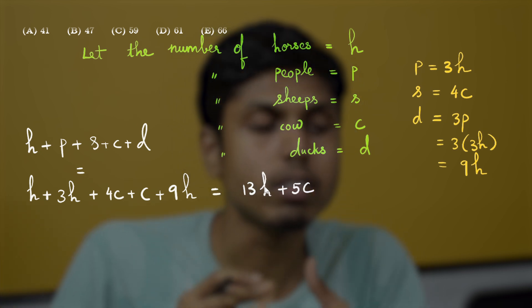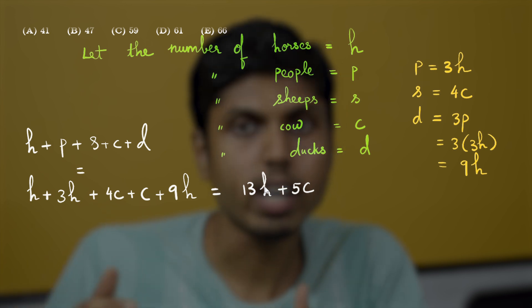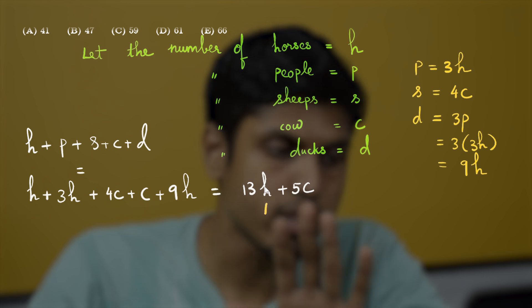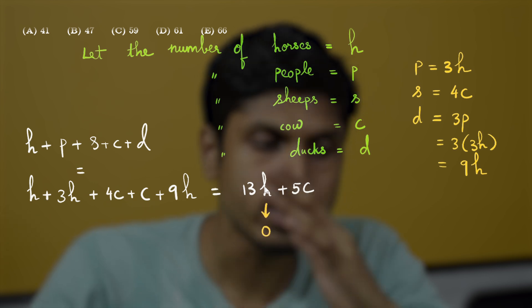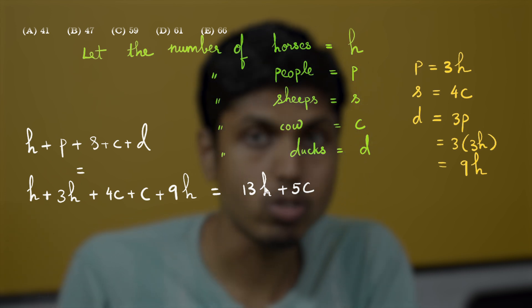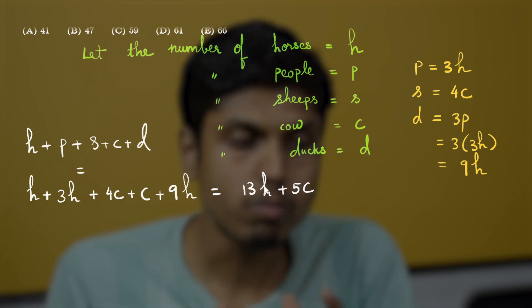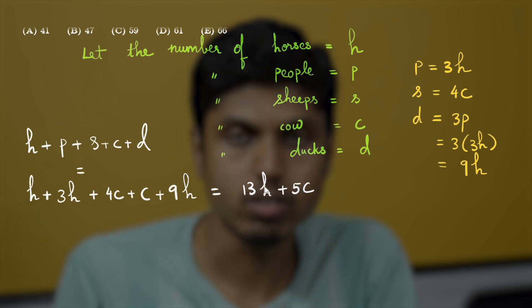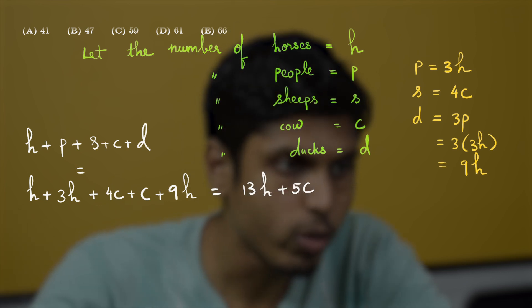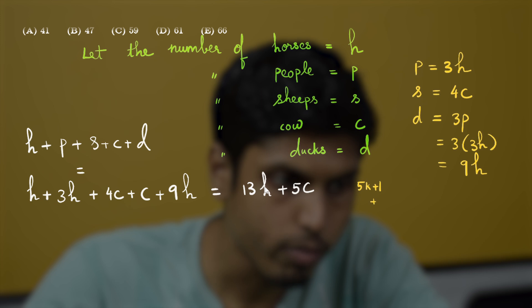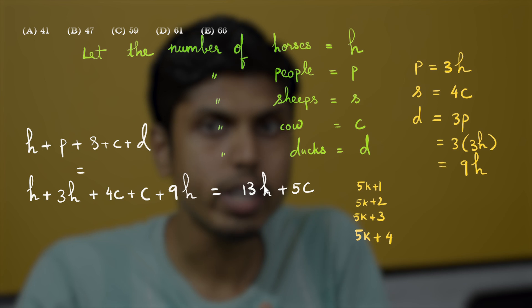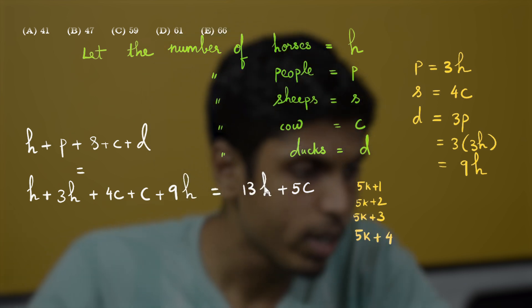Here is a key idea to crack this problem. Consider multiples of 5, multiples of 5 plus 1, plus 2, plus 3, and plus 4. All multiples of 5 can be represented by taking h = 0 and c as the appropriate value. For remainders that are non-zero when divided by 5, we need further analysis. Numbers of the form 5k+1, 5k+2, 5k+3, 5k+4 are obtained by substituting values of h from 1 to 4.